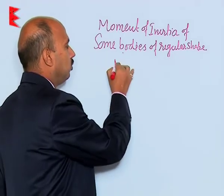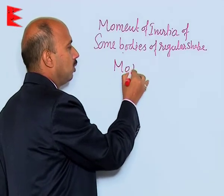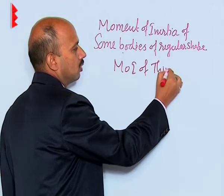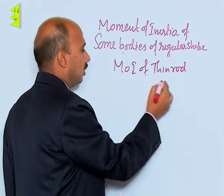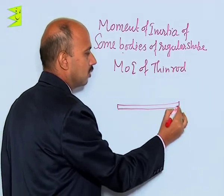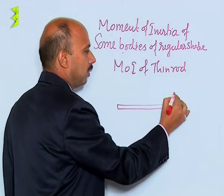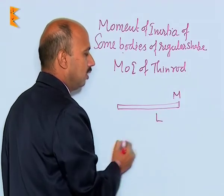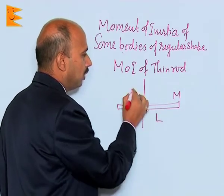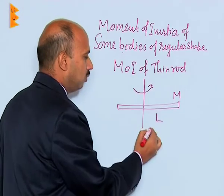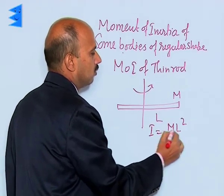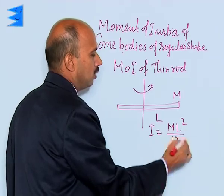We can also take the moment of inertia of a thin rod. Suppose you have got a rod of mass m and length l, and you want to get the moment of inertia about this axis. So you can write I is equal to m l squared by 12.